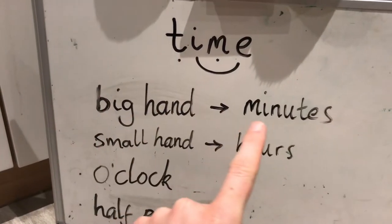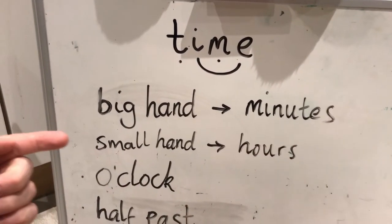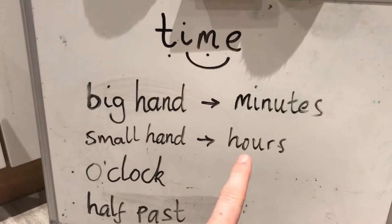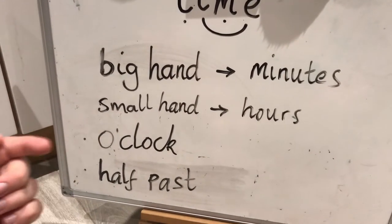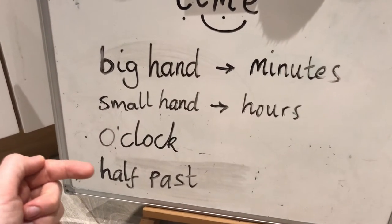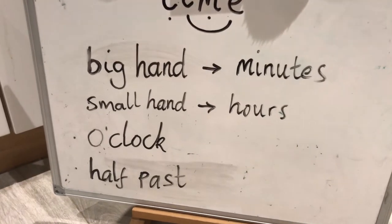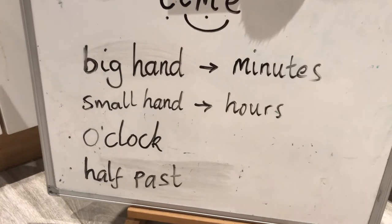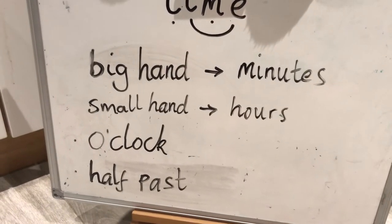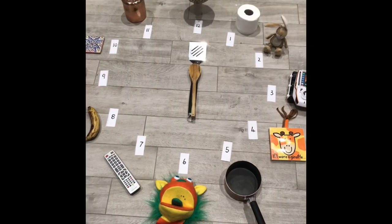Today we're going to cover the big hand, which means the minutes, the small hand, which means the hours, and we're going to look at o'clock and half past. We won't do any more today. In a minute, I'm going to need you to go and get 12 objects because we're going to make our own clocks on the floor.